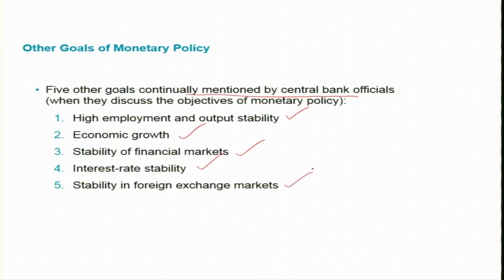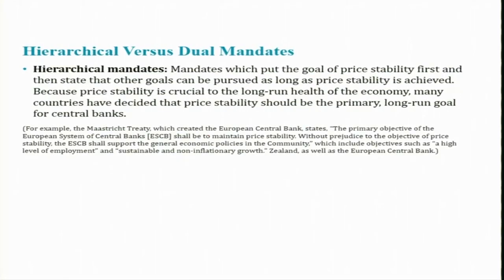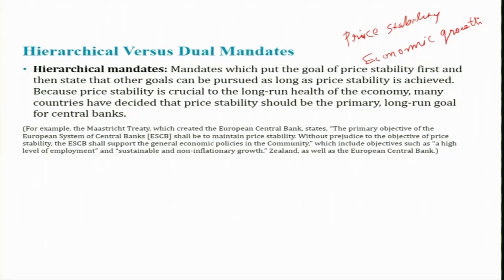In order to achieve all these goals, the discussion was centered mainly around two aspects: price stability and economic growth, which includes growth in GDP as well as stable employment levels. In the long run, no inconsistency exists between the price stability goal and other goals. Because price stability is crucial to the long-run growth of the economy, many countries have decided that price stability should be the primary long-run goal for the central bank.